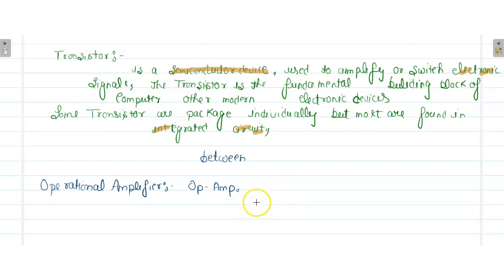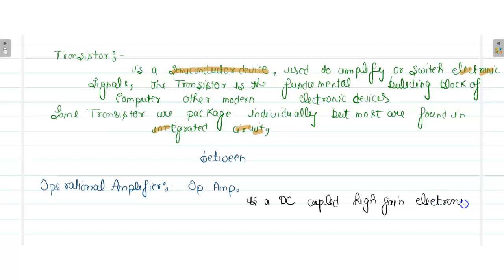An operational amplifier, or op-amp, is a DC-coupled, high-gain electronic voltage amplifier. So in the first line, we can select some differentiating points: the transistor is a semiconductor device used for amplifying and switching, whereas in the case of the operational amplifier, this is a DC-coupled high-gain electronics voltage amplifier.